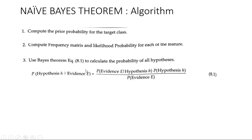What is Bayes theorem? We explained it in the last class. The formula for Bayes theorem: probability of hypothesis H given evidence E — this is the posterior probability — equals probability of evidence E given hypothesis H, which is the likelihood probability, multiplied by the probability of hypothesis H, the prior probability, divided by the probability of evidence E, also a prior probability. So, posterior probability equals likelihood probability times prior probability of H divided by prior probability of evidence E.